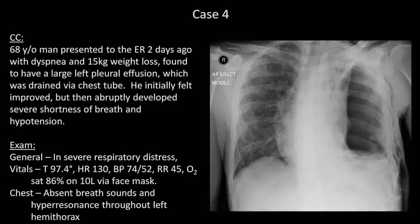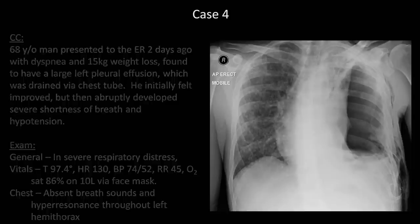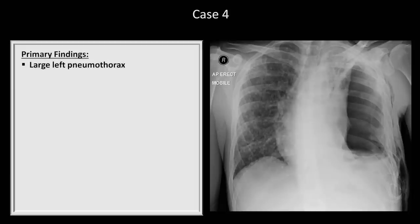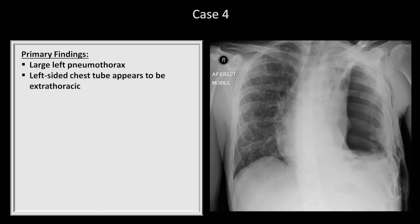Case 4. A 68-year-old man presented to the ER two days ago with dyspnea and weight loss, found to have a large left pleural effusion which was drained via chest tube. He initially felt improved but then abruptly developed severe shortness of breath and hypotension. On the left, where the left lung is supposed to be, it is completely devoid of lung markings — a large pneumothorax. This appears to be related to some technical problem with the chest tube, which is coiled up at the bottom of the film and appears to be extra-thoracic — it looks like it just fell out. The rightward shift of the heart and mediastinal structures strongly suggests he has a tension pneumothorax.